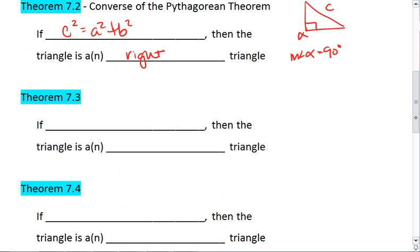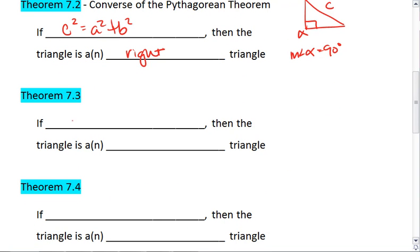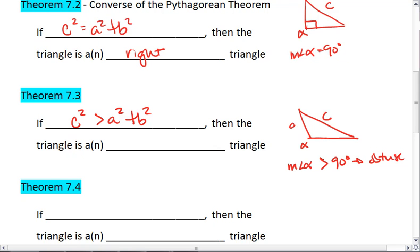The next theorem says, however, if we plug in these numbers, we find that c squared is actually greater than a squared plus b squared, that must mean that this angle alpha is greater than 90 degrees, making it an obtuse angle. So we have an obtuse triangle.